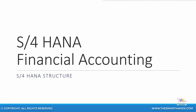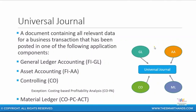In this presentation, we will look at the S4HANA structure. One major difference between SAP ERP and SAP S4HANA is the universal journal. This universal journal acts as a common table between general ledger accounting, asset accounting, controlling, material ledger, and so on.